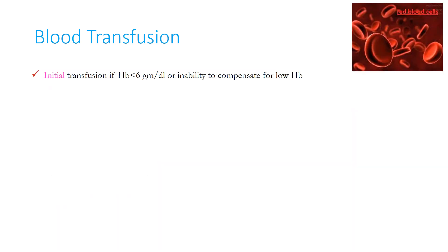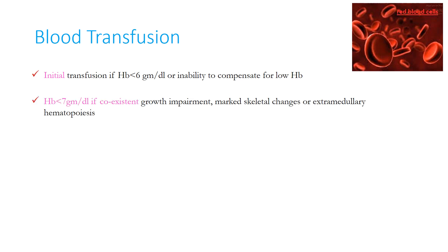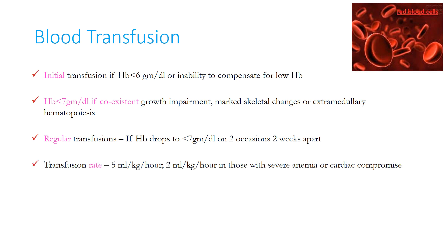Initial transfusion is indicated if hemoglobin is less than 6 g/dL or the patient cannot compensate, e.g. cardiovascular decompensation, increasing signs of ineffective erythropoiesis such as bone changes or massive splenomegaly. Hemoglobin less than 7 g/dL warrants transfusion if there is co-existent growth impairment, marked skeletal changes, or extramedullary hematopoiesis. Regular transfusions are initiated if hemoglobin drops below 7 g/dL on 2 occasions 2 weeks apart. The transfusion rate is preferably 5 ml/kg/hour, or 2 ml/kg/hour in severe anemia or cardiac compromise, with diuretics to prevent sudden cardiac decompensation.